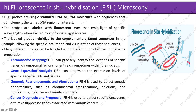Fluorescence In Situ Hybridization, or FISH Microscopy: FISH probes are single-stranded DNA or RNA molecules with sequences that complement the target DNA region of interest. The probes are labeled with fluorescent dyes that emit light of specific wavelengths when excited by an appropriate light source. The labeled probes hybridize to the complementary target sequences, as shown in the diagram, allowing specific localization and visualization. Multiple different probes can be labeled with different fluorochromes in the same preparation.